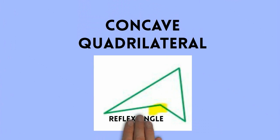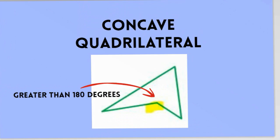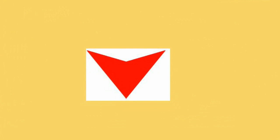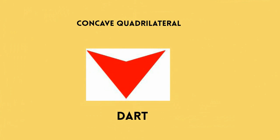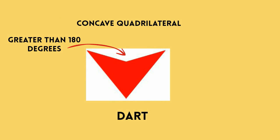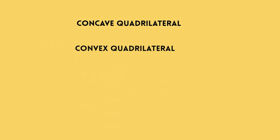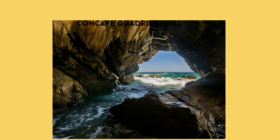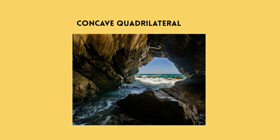A concave quadrilateral has a reflex interior angle measure. In other words, one interior angle measure is greater than 180 degrees. A dart is one example of a concave quadrilateral. A helpful method for memorizing the difference between these two types of quadrilaterals is to think of a cave for a concave quadrilateral.